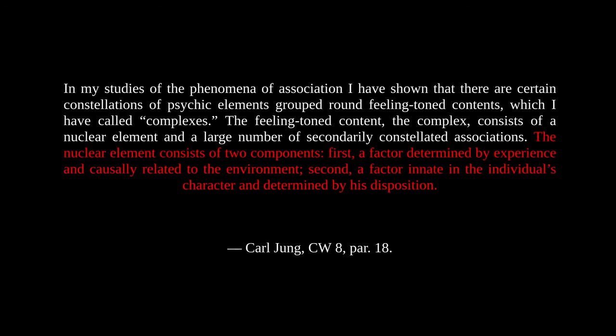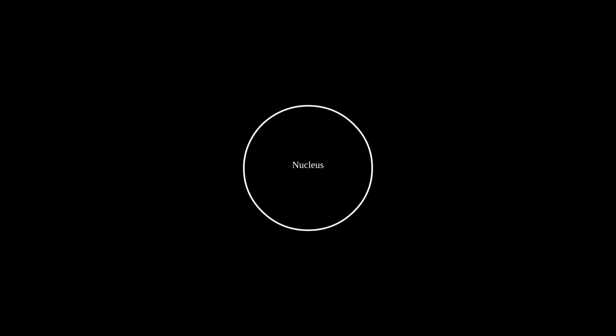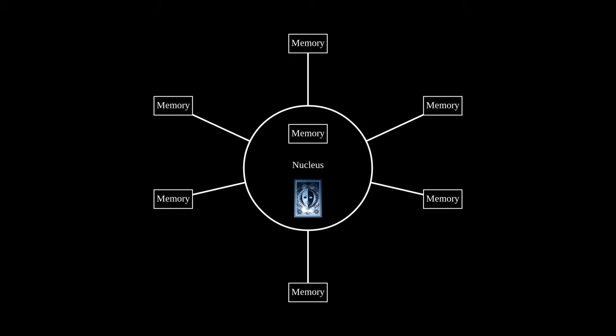Basically, a complex is a bundle of connected psychic content. At its core is a sort of nucleus. This nucleus contains two things. First, content related to the personal experience that created the complex. This might include the memory of the experience that led to the complex, or the emotions surrounding it. Second, an archetypal image. Around this nucleus, a sort of web of related content will form. That is, content that has some conceptual link to the nucleus will become connected in part of the complex.